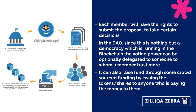In the DAO, since this is nothing but a democracy running on the blockchain, the voting power can be optionally delegated to someone a member trusts more — this is in fact voting by proxy in a real organization. It can also raise funds through crowdsource funding by issuing tokens or shares to anyone paying money to them. This payment and issuing of shares or tokens can be done in real time, unlike the more than 60-day process in a real organization.